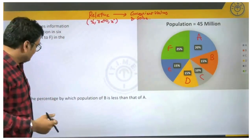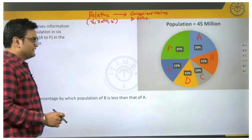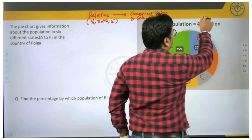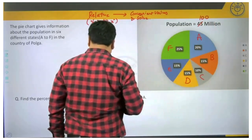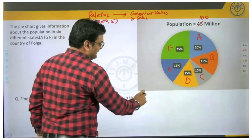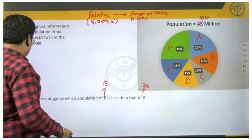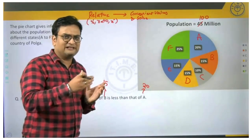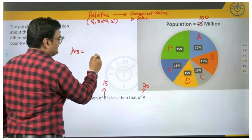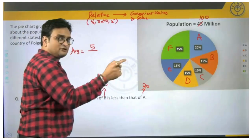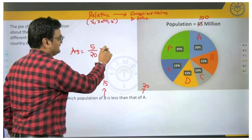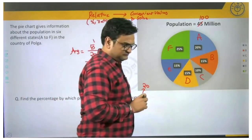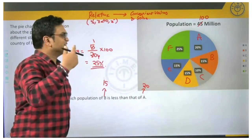He is asking us B with respect to A. In this pie chart, the total value given is 45 million, but I will not worry about that. I will simply assume the total population to be 100. If the total is 100, then B is 15 percent meaning 15 people, and A is 20 percent meaning 20 people. The question becomes: find the percentage by which 15 is less than 20. The difference is 5, compared with respect to 20, so 5/20 multiplied by 100 gives 25 percent. The answer is 25 percent, and the learning is: if the question is in relative terms, do not bother about the absolute values given.